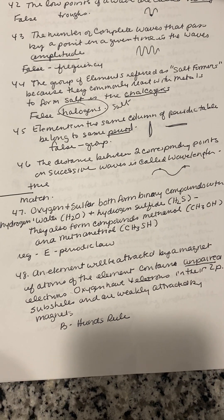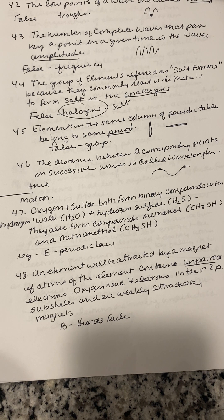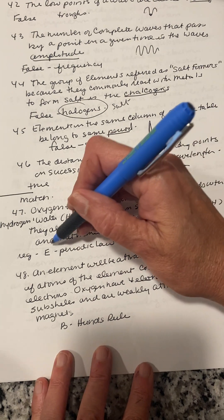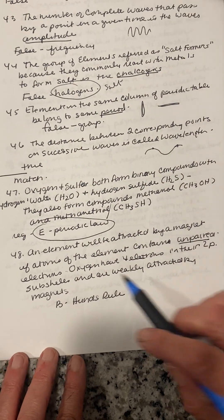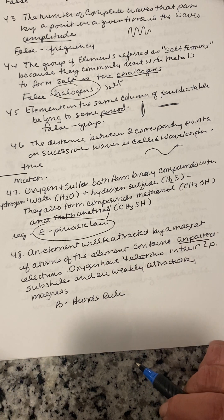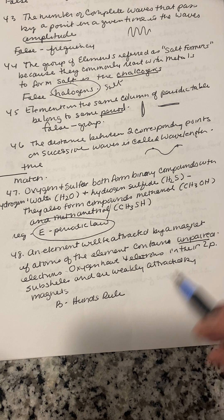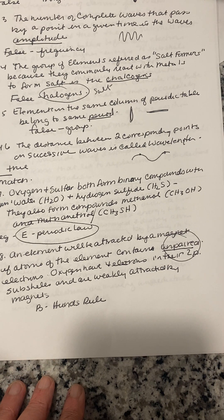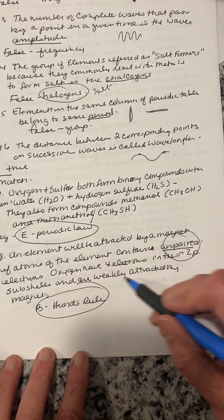Number forty-seven: oxygen and sulfur both form binary compounds with hydrogen — water and hydrogen sulfide. They also form compounds methanol and methanethiol. This matches normal periodic law. Number forty-eight: an element will be attracted by a magnet if atoms of the element contain unpaired electrons. The rule about unpaired electrons filling first before pairing is Hund's rule.